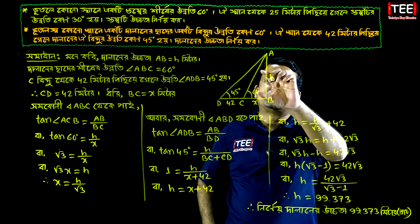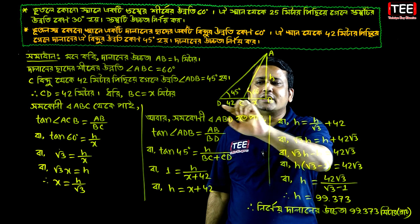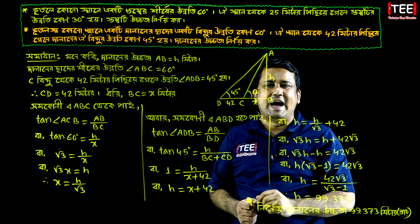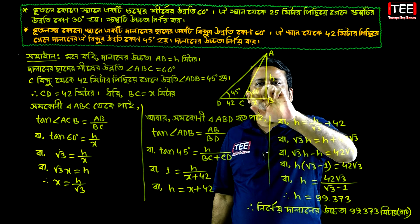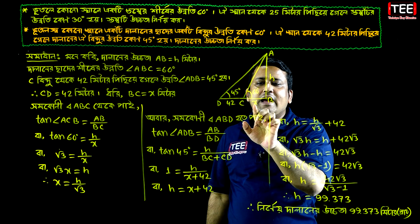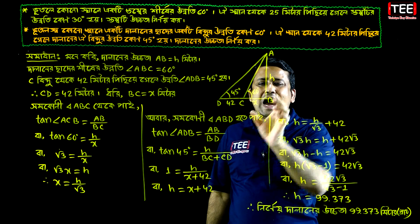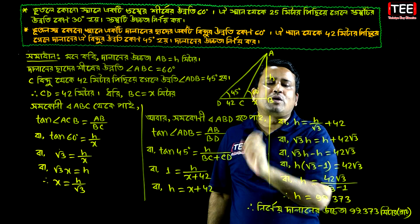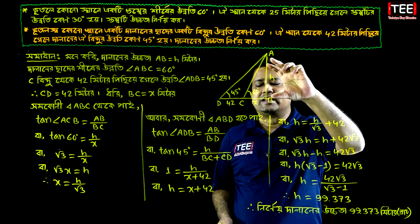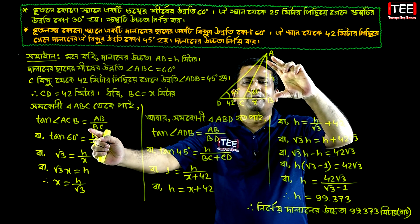The first thing we have to do is work with triangle ABC and triangle ABD. C equals AB — angle CBC equals AB.